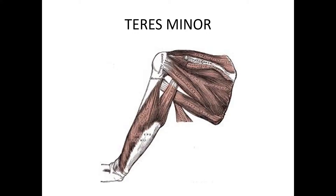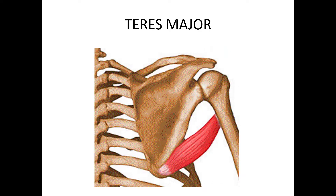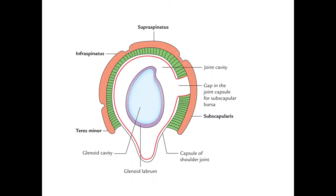Here we can see teres major and teres minor in the diagram. This diagram shows the attachment of teres major. Another diagram beautifully illustrates the muscles making up the rotator cuff of the shoulder joint, with the green color representing the fibrous capsule — all the muscles merge with it to reach their respective insertions.